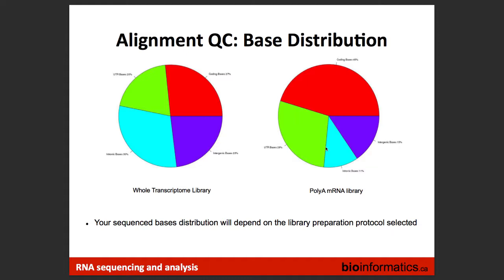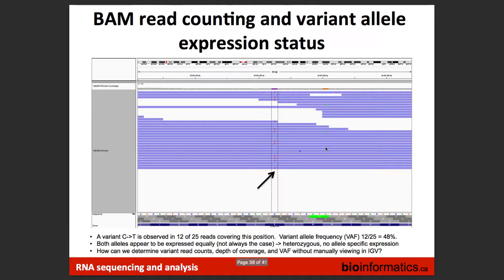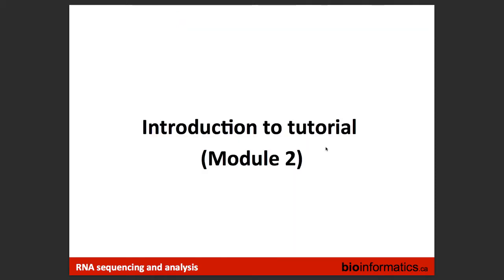Base distribution in QC gives you an idea of whether your library selection strategy worked. For example, if you were doing whole transcriptome versus mRNA sequencing, you should expect differences in the proportion of coding bases versus intronic or intergenic bases, reflected in distribution plots. And that concludes this module.